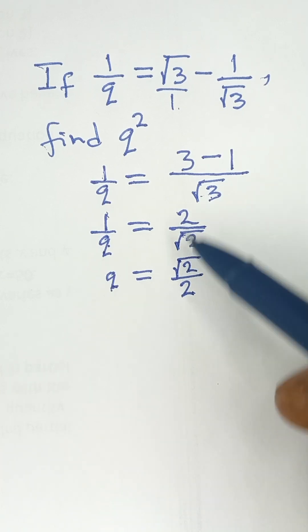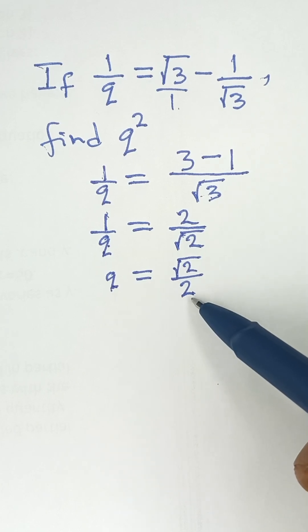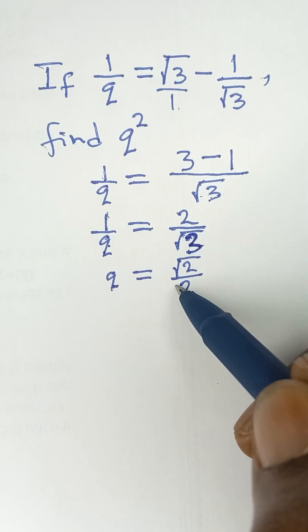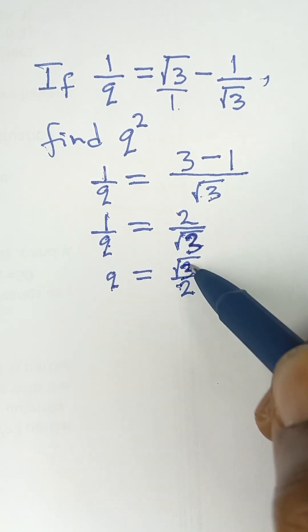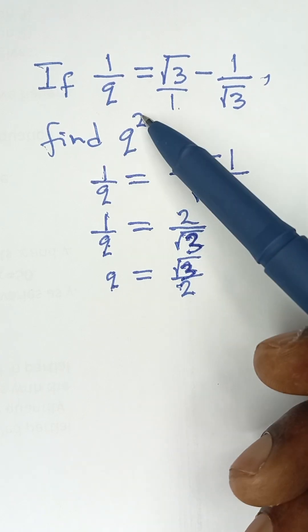And that will be equal to root 2 goes up and 2 comes down, which is root 2 over... sorry, this is root 3. So root 3 over 2. And now, the equation says find Q squared.